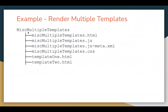For example, if we have created a lightning web component named as Miss Multiple Templates, whenever you create this component, .html, .javascript, and .jsmeta.xml files will be created automatically. If you want to apply CSS or styles, you can create a .css file. Additionally, if you want to create additional HTML files, you can create those as well. Here you can see we've created template-1.html and template-2.html files in the same lightning web component where already one HTML file is available. I will demonstrate how we can use them all together.